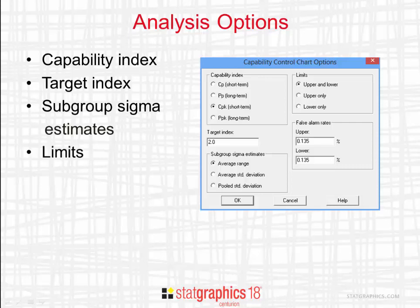In the field labeled Limits, select the control limits that you wish to plot. The most common selections are Upper and Lower or Lower only. Finally, specify the false alarm rates associated with the upper and lower control limits. The false alarm rate is the chance of getting an index beyond the control limits if in fact the process is operating at the target value of the index. The default is 0.135% for each control limit, which corresponds to a three sigma control chart.